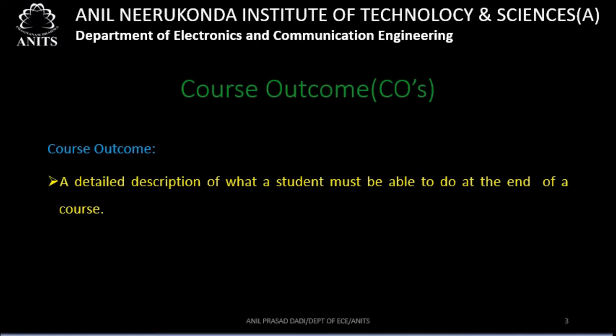Course outcomes. A detailed description of what a student must be able to do at the end of a course is what is termed as course outcome. We have seen earlier a program outcome — the skills that can be demonstrated by the student upon the completion of the program. Similarly, course outcome means what skill set can be developed by the student upon the completion of the course based on what they are taught.